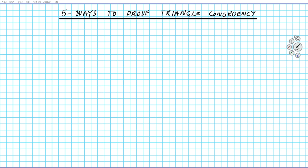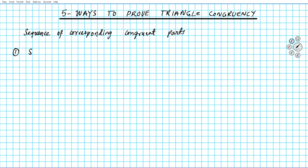We can view these five ways as the sequence of corresponding congruent parts — angles and sides. Way number one is known as the SSS congruency theorem. SSS simply means that if you have two triangles and three pairs of sides are congruent — side, side, side — three corresponding sides are congruent, you can automatically conclude that those two triangles are congruent.